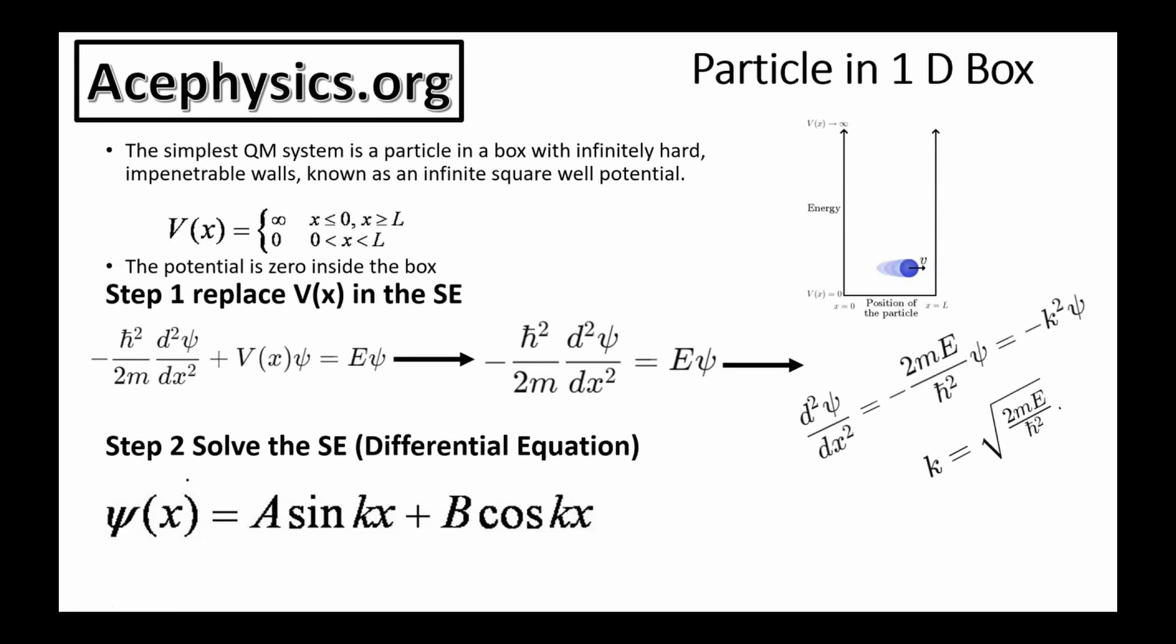In any quantum mechanics problem, it's essential to start by clearly defining the system you will be analyzing. The simplest quantum mechanical system is a particle in a box with infinitely hard, impenetrable walls known as an infinite square well potential. For a particle in a box, the potential energy is zero inside the box, so the particle only possesses kinetic energy.